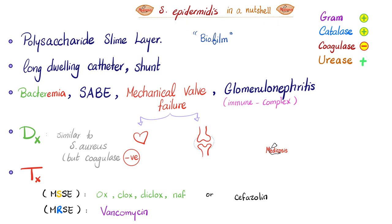Staph epidermidis in a nutshell: gram-positive, catalase-positive, coagulase-negative, urease-positive. The polysaccharide slime layer biofilm helps it adhere to long-dwelling catheters, shunts, IV lines, and prosthetic devices. It can cause bacteremia, contaminate blood cultures, lead to subacute bacterial endocarditis, cause mechanical valve failure, and cause immune complex-mediated glomerulonephritis.